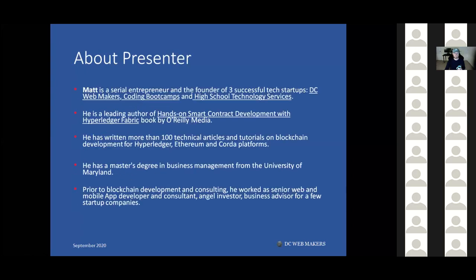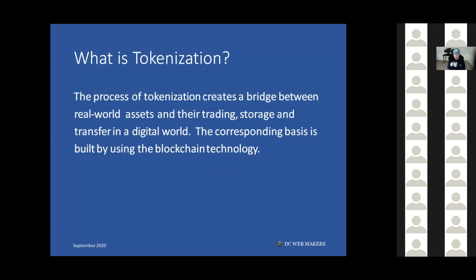About me — I've been in the tech industry for 15 to 20 years. I have tech companies, I'm the author of the Hyperledger Fabric book, and I've written a lot of blockchain articles in the community. I also have an MBA background and have been programming since high school. You can add me on LinkedIn if you want to connect after this.